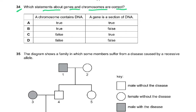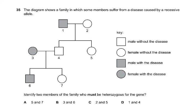Question 34: which statements about genes and chromosomes are correct? A chromosome contains DNA — true, a chromosome is made up of DNA and protein. A gene is a section of DNA — also true. So the answer is A; the other options are wrong because somewhere one element doesn't match the correct definition.